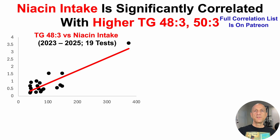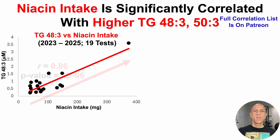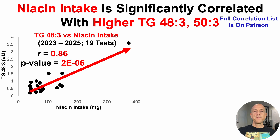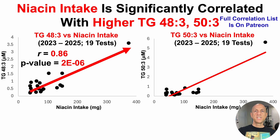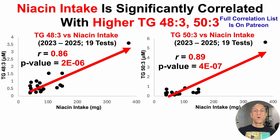Starting with TG48-3 versus niacin intake: on the y-axis TG48-3, on the x-axis average niacin intake between tests. They are significantly correlated — the correlation coefficient is 0.86, which is considered a strong correlation (greater than 0.7), and the p-value is 2×10⁻⁶, far below the 0.05 significance threshold. Similar data for TG53 versus niacin intake shows another strong correlation with a p-value well below significance. In other words, relatively higher niacin intakes are significantly correlated with higher levels of both triglycerides.